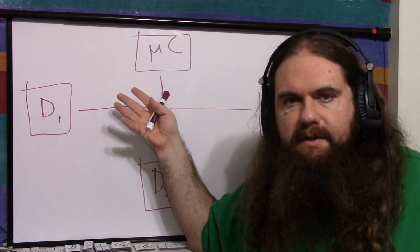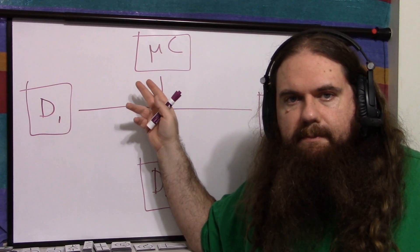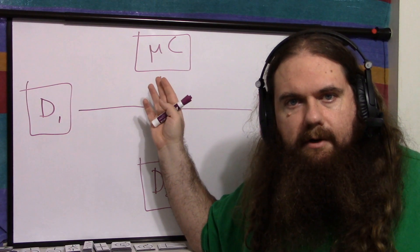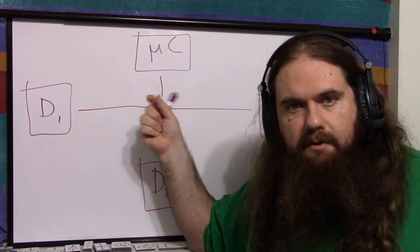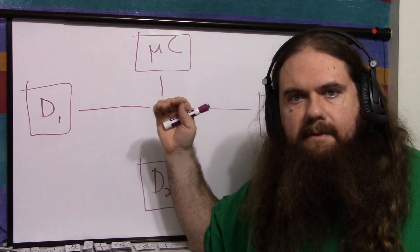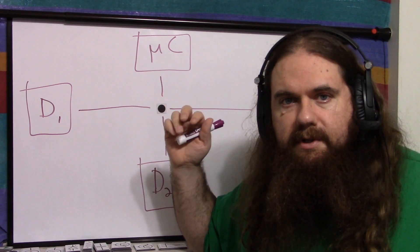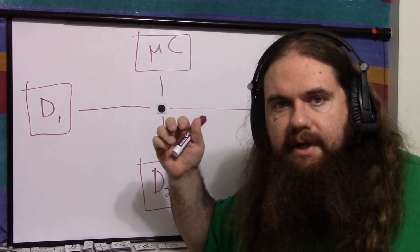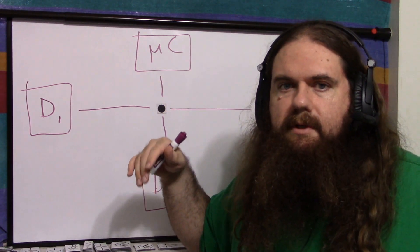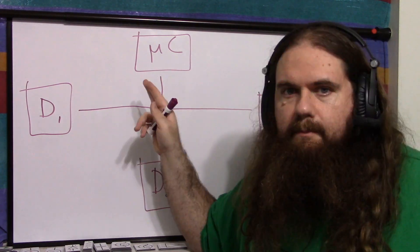A device might support this natively if it has a tri-state pin. Like the microcontroller on an Arduino Uno — you can set it to output high or low, but you can also set it to input, which is high impedance. Input doesn't mean you have to read it; input just means not output. So input can also just mean turn it off.